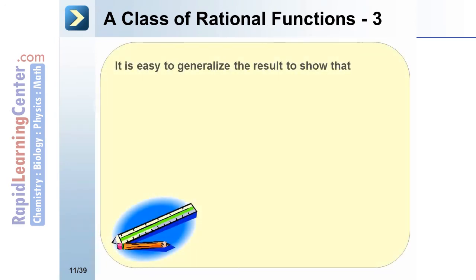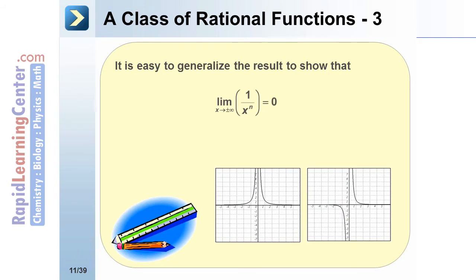It's easy to generalize these results to show that the limit as x approaches plus or minus infinity of 1/xⁿ equals 0, as long as n is a positive real number.